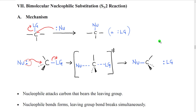We're now going to look at the two major types of nucleophilic substitution reactions. These two reactions are categorized by their specific mechanism. The first one is called the bimolecular nucleophilic substitution reaction. It's often abbreviated SN2, which stands for Substitution Nucleophilic Bimolecular, two molecules. And that's generally the name that we're going to use to refer to it — the SN2 reaction.